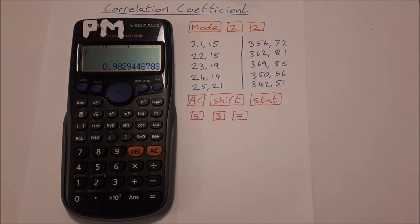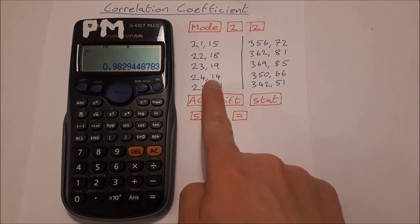So the closer you are to 1 or to minus 1, the stronger the correlation. The closer you are to 0, the weaker the correlation.